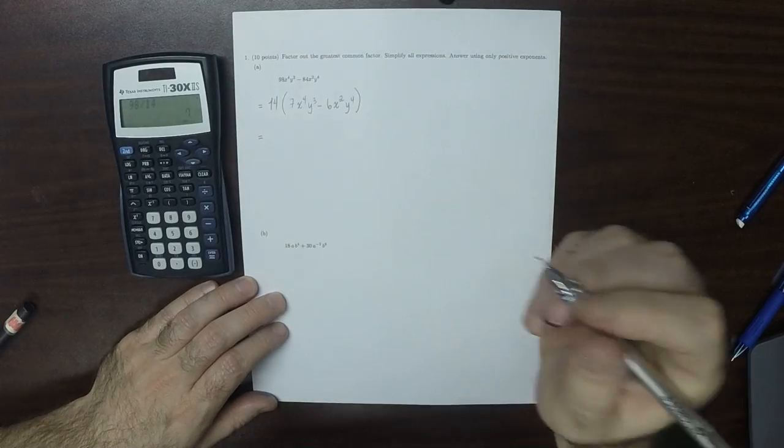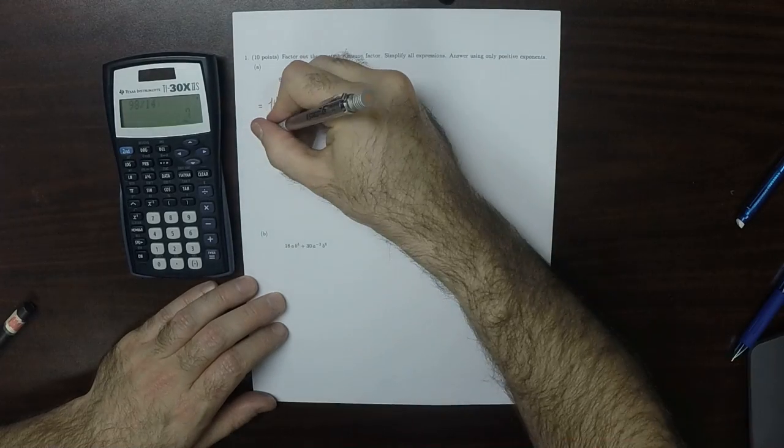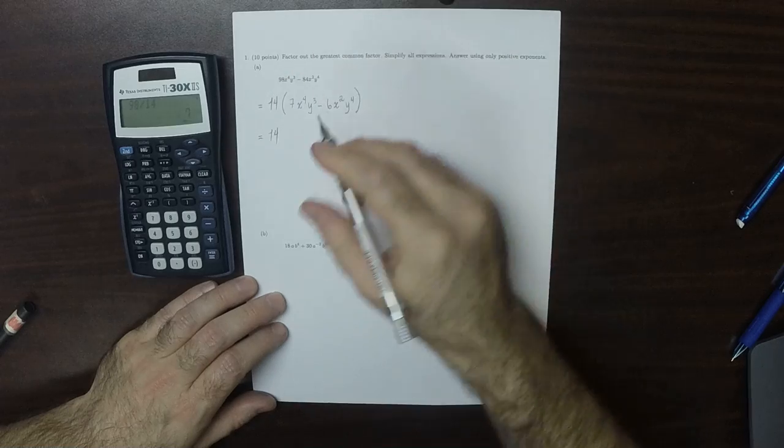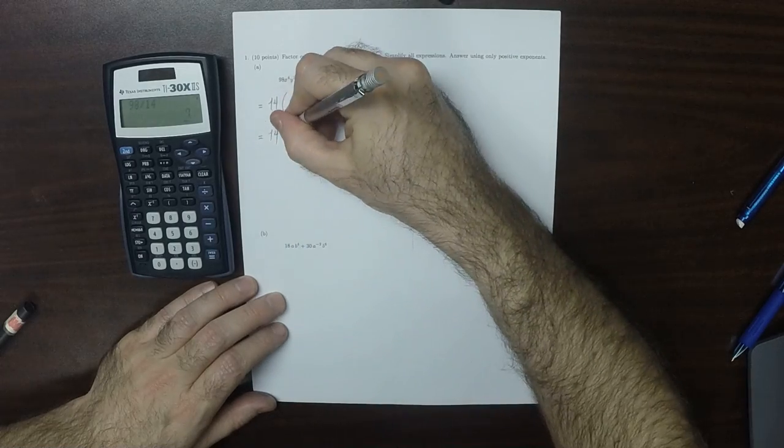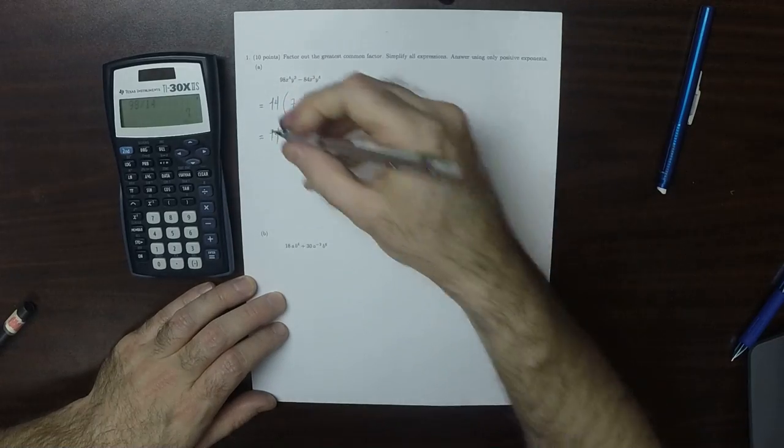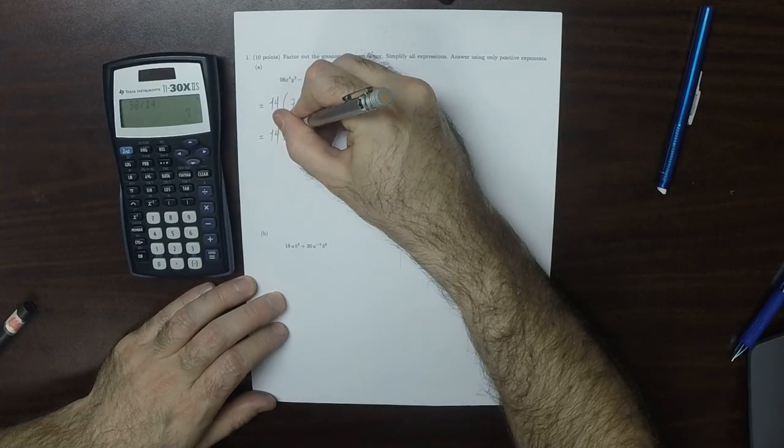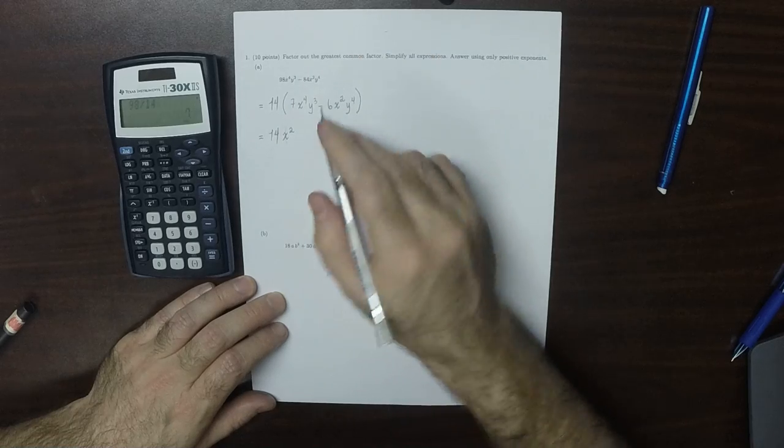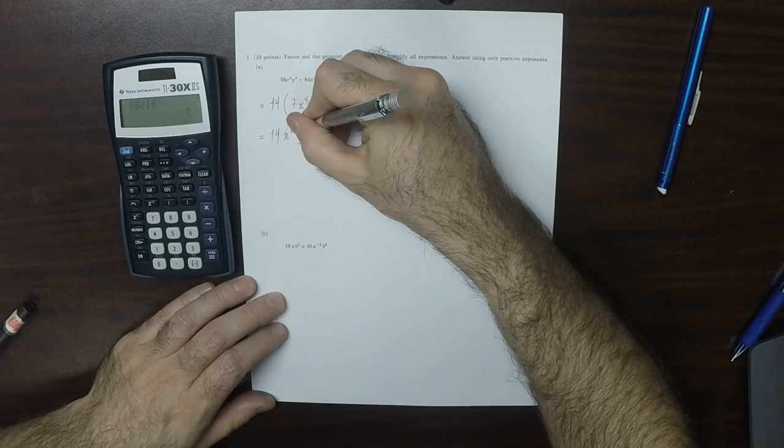Then we can factor out powers of x and y. So 14, and then as for the x's, we can get out 2 of them, so x squared. And as for the y's, we can get out 3, so y cubed.